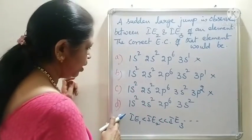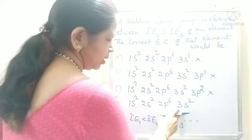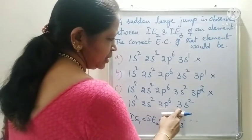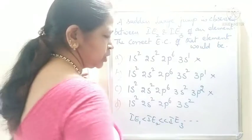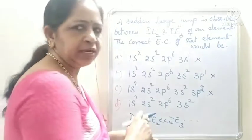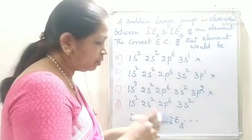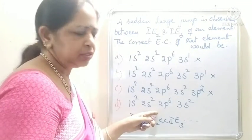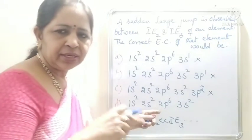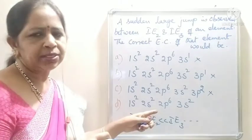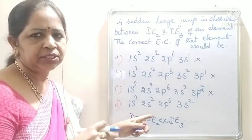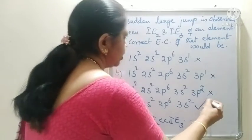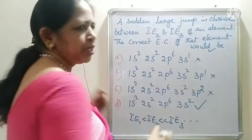In option D, there are two electrons in the outermost orbit: 1s², 2s², 2p⁶, 3s². Two electrons in the outermost orbit. To remove the third electron, we have to remove it from the penultimate inner shell. So to remove that third electron, it requires a large amount of energy. Therefore, option D is correct for this question.